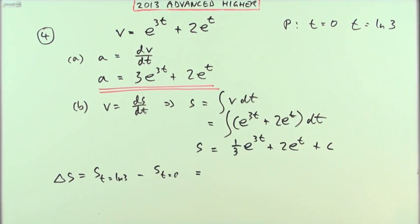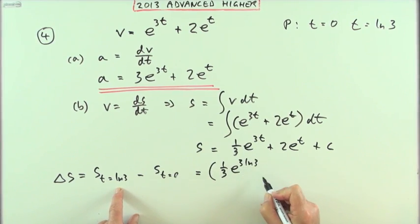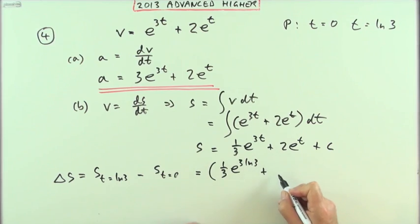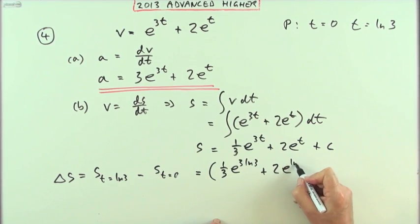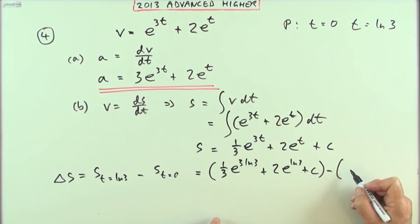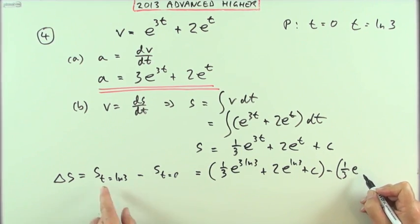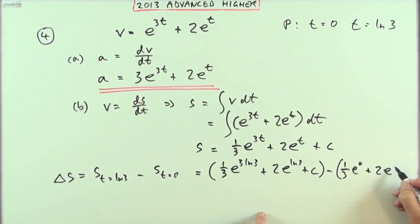So that distance will be, well, work it out at ln3. I've got a third of e to the 3 times ln3 plus 2 times e to the ln3 plus this unknown constant minus, I should be ringing the bell here, minus 1 third of e just to the 0 now plus 2e to the 0 plus that constant.